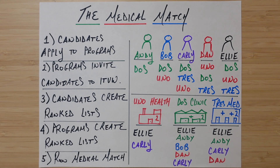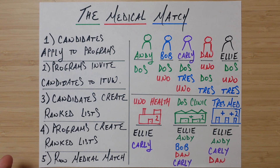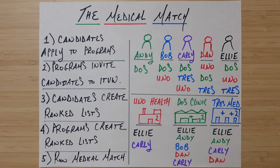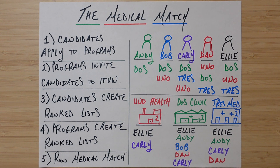The first step is that candidates apply to programs — they say they might want to go here or there. Then programs invite those candidates to interview. Once the interview process is done, candidates and programs each create ranked lists of each other. Each candidate creates a ranked list of programs they'd be happy going to, most preferred on top, least preferred on the bottom. They can also leave programs off, but we'll see the consequences of that. Each program also creates a ranked list of which candidates it would most want.